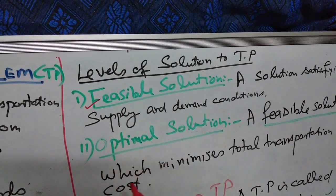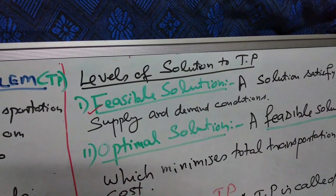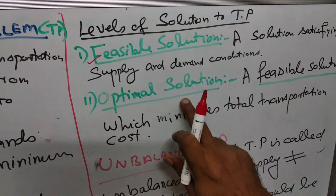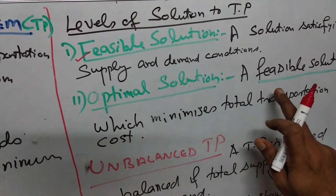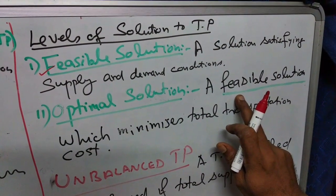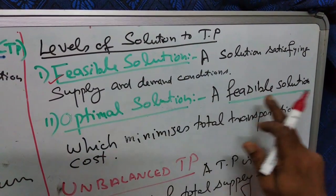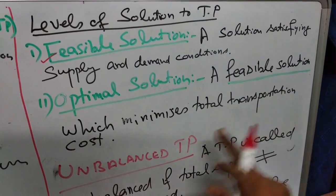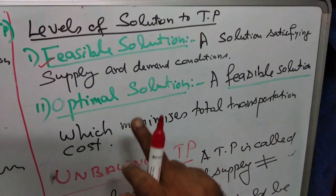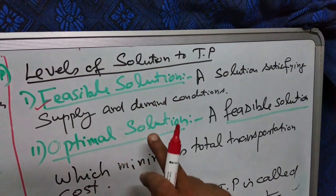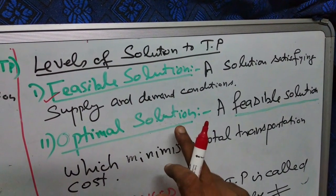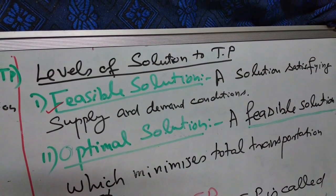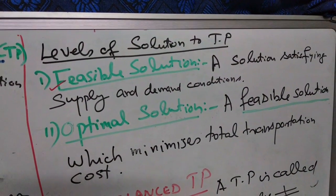The second one: what is the prime objective? Minimization. So it is called optimal solution — a feasible solution which minimizes total transportation cost. All feasible solutions need not be optimal, but an optimal is always a feasible solution.